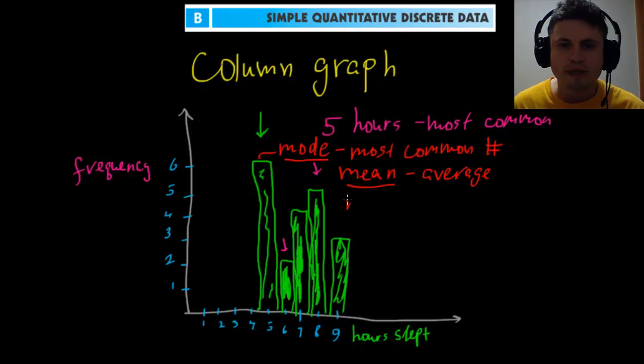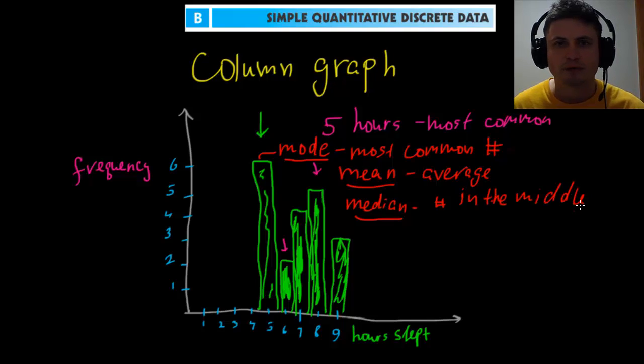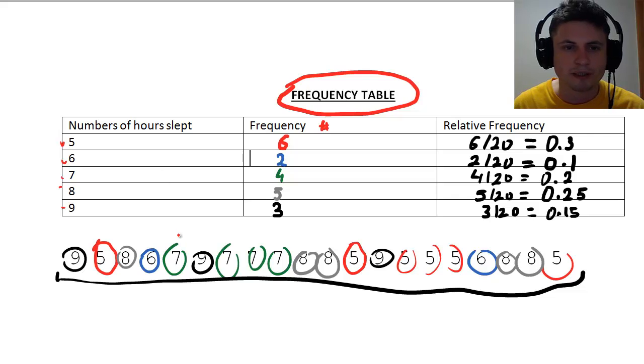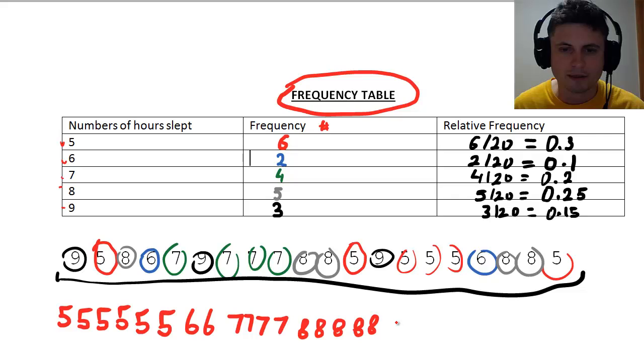Then there's something called median, which is the number right in the middle of distribution. To find the median, you first have to rewrite all of your numbers in order, starting with the smallest number. This will be 5 six times, 6 twice, and 9 three times. Now using this, we have to try to find the median or basically the middle.